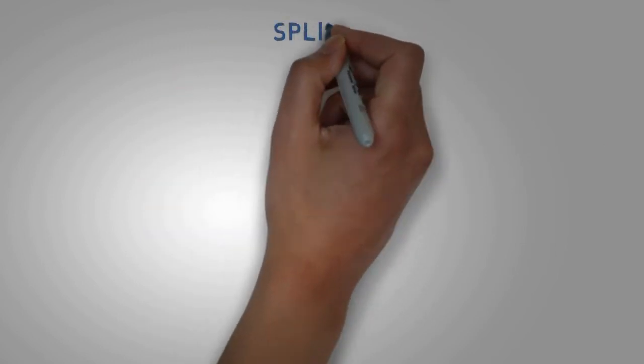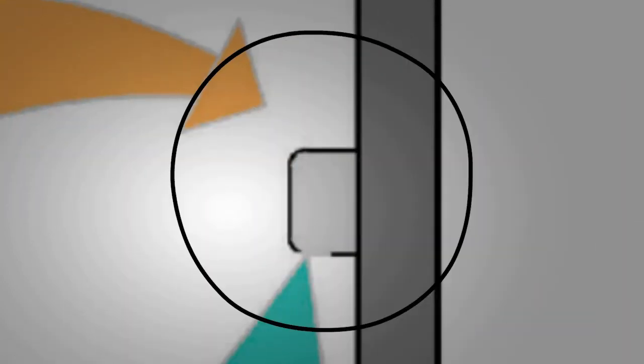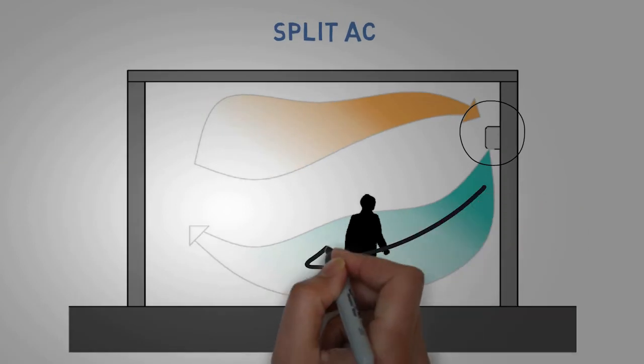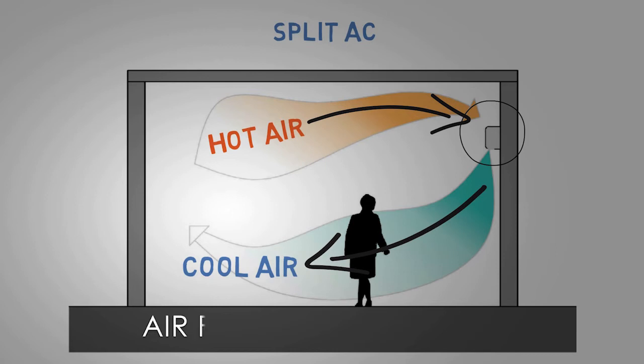Split AC: The indoor AC unit of split AC projects out from the wall surface in a room. The cool air tends to settle down, while the hot air tends to go up. So, we place the AC at a higher elevation to achieve this natural air cycle of air flow.